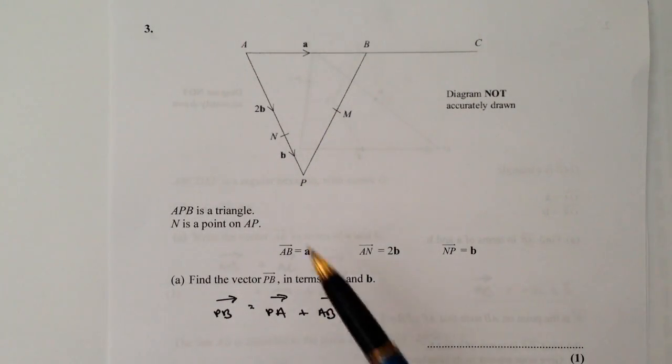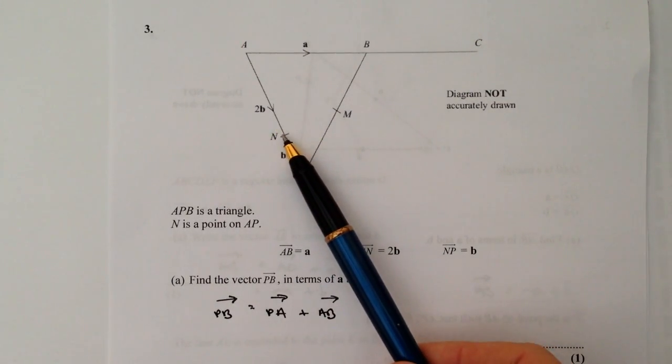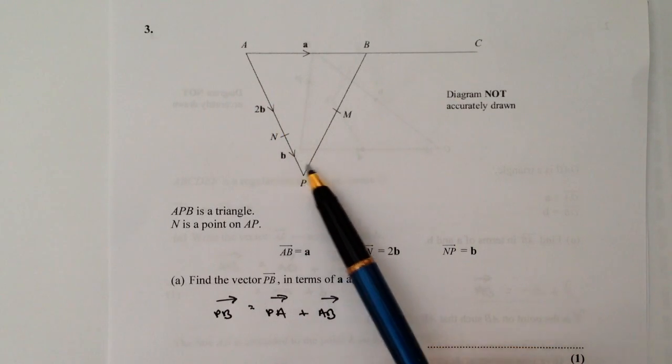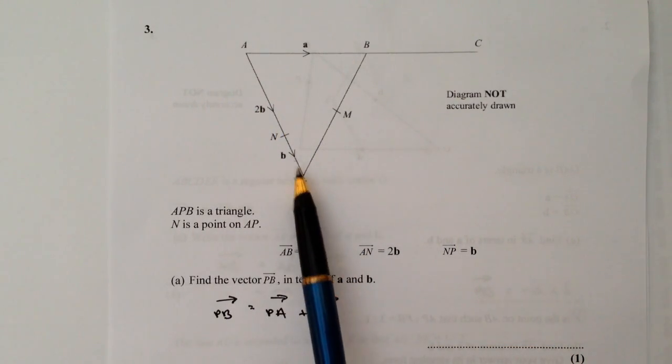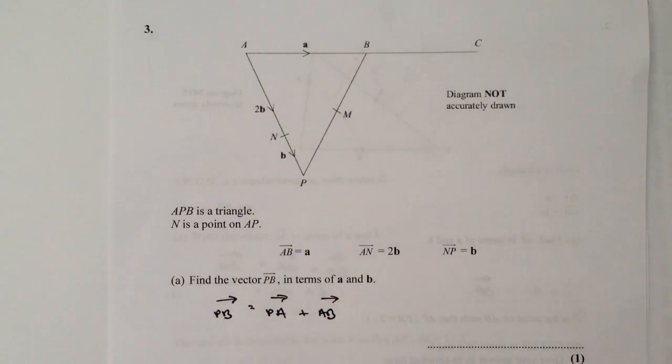So let's have a look at that. If we look at vector PA, what we know is that this bit here is 2B and this bit here is B. So in other words, the total amount along this is 3B, but it's heading in the southern direction. We want to go in the opposite direction, so it's going to be minus 3B. And then we also have vector AB. Well, that's fairly straightforward. That's just simply positive A.